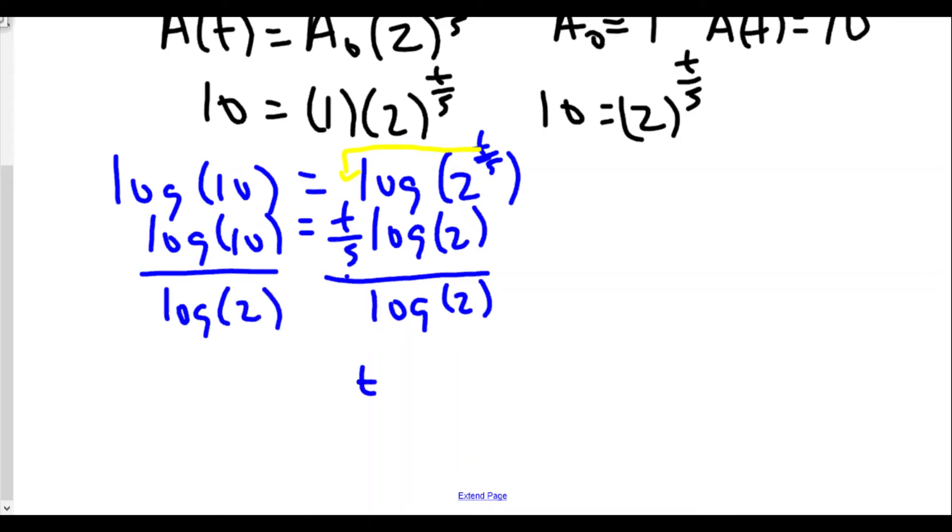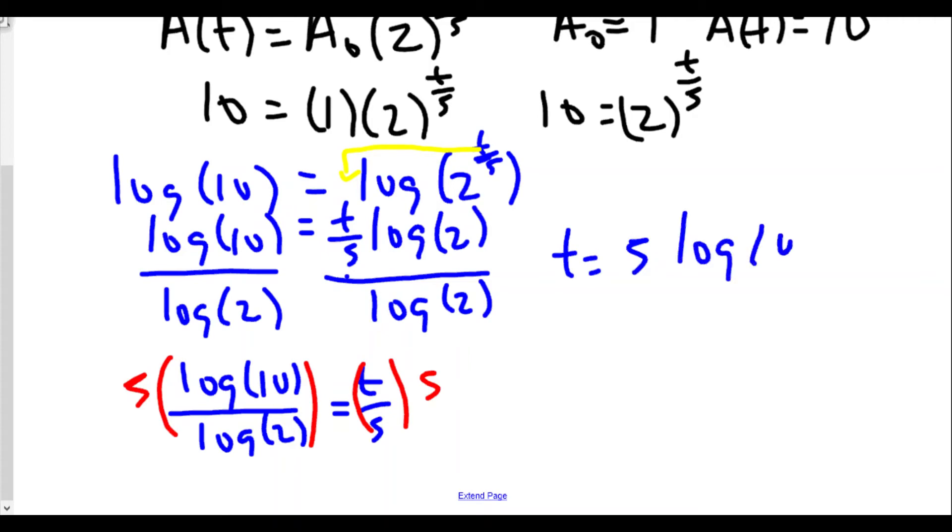So the next thing we do is divide both sides by log 2. So that means t over 5 equals log 10 divided by log 2. But we don't want t over 5, we want t by itself. So since the 5 is dividing t, we're going to multiply both sides by 5. Therefore, we get t equals 5 times log 10 divided by log 2.